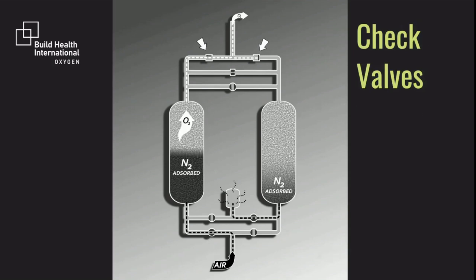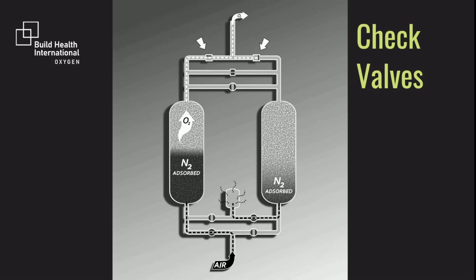Let's take a look at the output of the plant. These two valves are known as check valves. They only allow air to flow in one direction. Both are set up so that oxygen can only flow from the top of the tank through the output, and not back through the other tank.